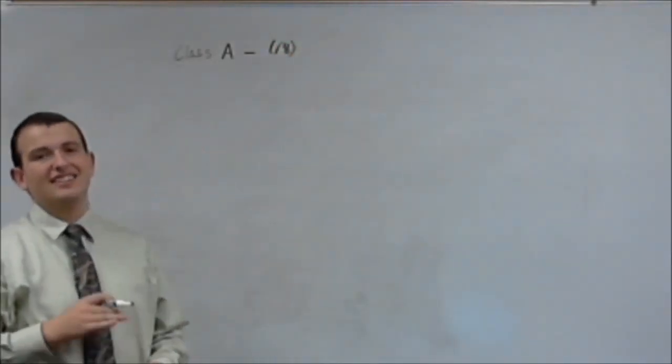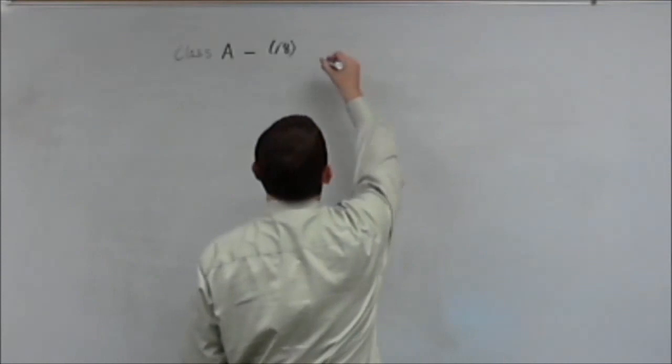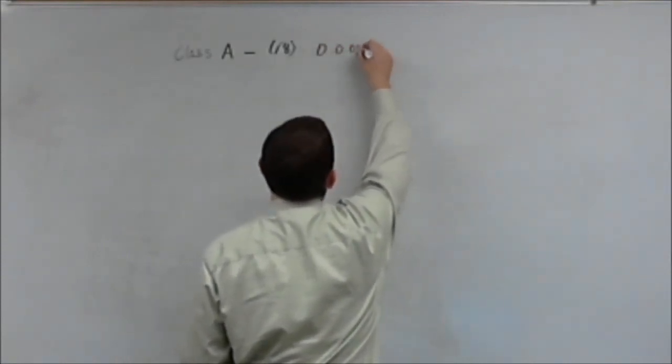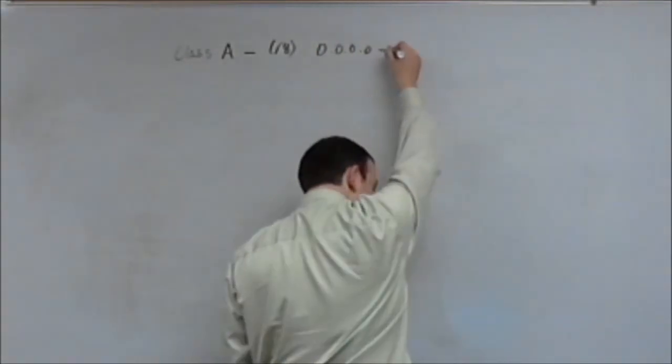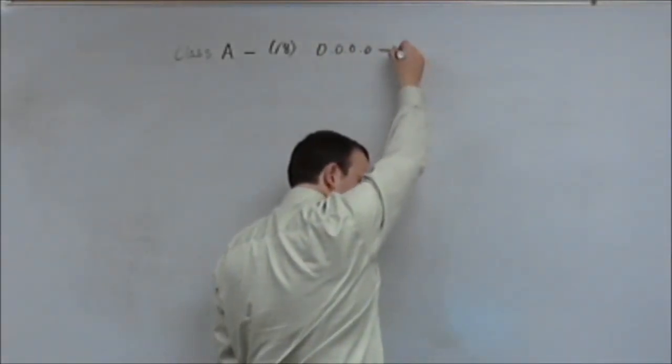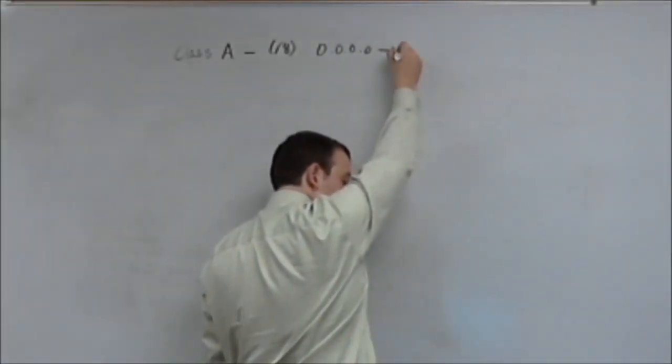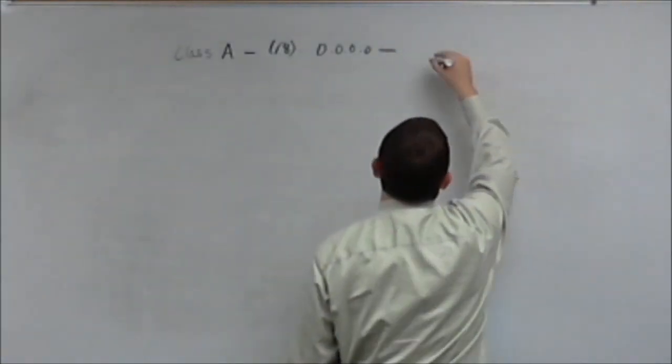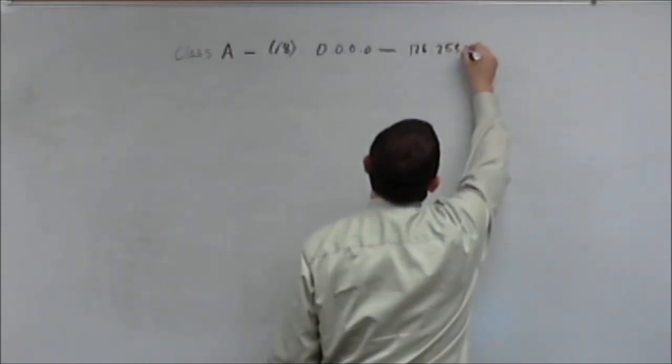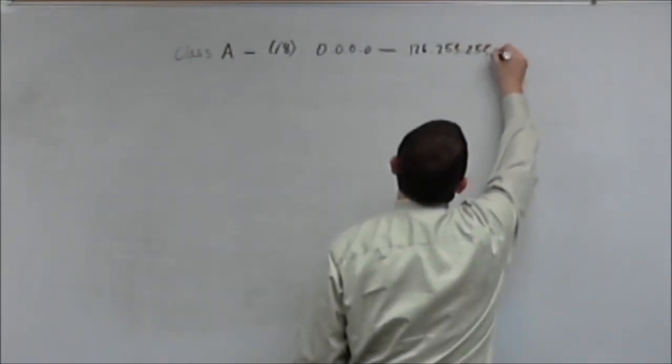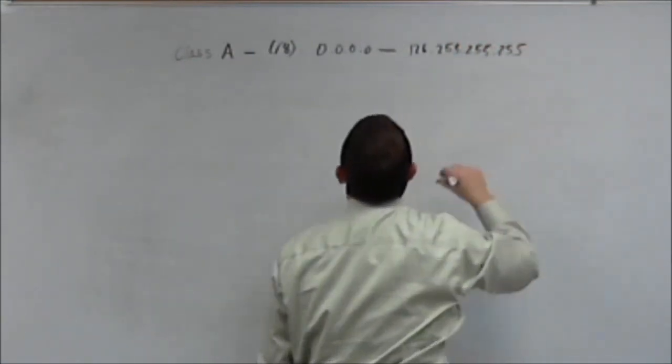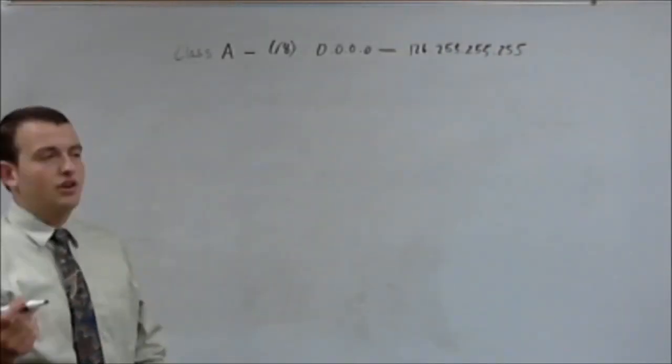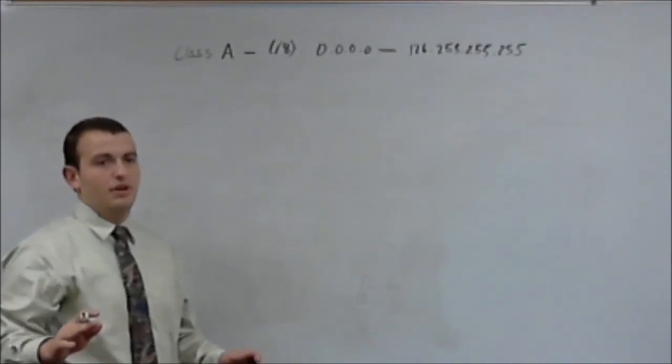So remember, class A is a slash 8, and it will take place between 0.0.0.0 all the way up to 126.255.255.255. Now remember, your loopback address is the 127 range, so it can't be overlapped.